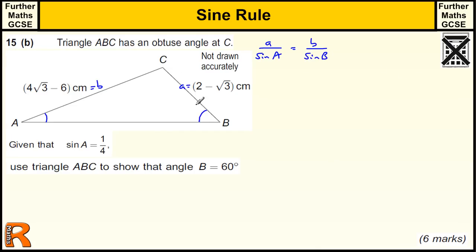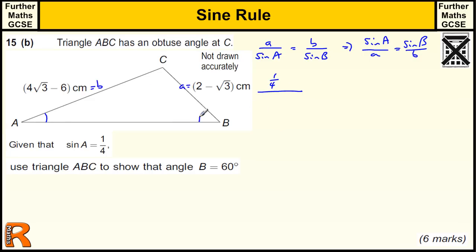We're going to use the sine rule, which is a over sine A equals b over sine B. Because I'm trying to find what B is, I'm actually going to write that with the angles on top: sine A over a equals sine B over b. That doesn't change the formula at all — it's the same formula, because if we turn the fraction upside down, we get the same formula. So we've got sine A, which is a quarter, over a, which is the side opposite A — 2 root 3 — equals sine B over b, which is 4 root 3 minus 6.